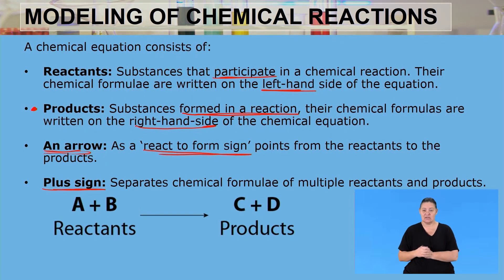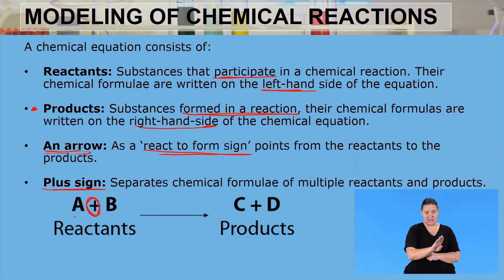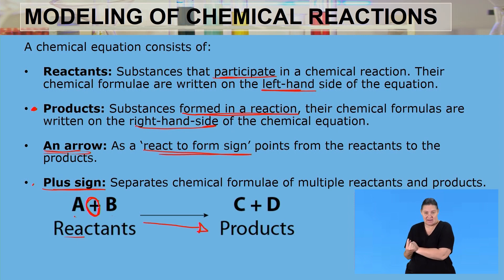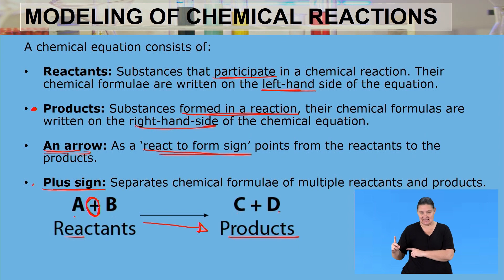As an example, we have two reactants A and B separated by a plus sign. These reactants are going to form something new. The arrow shows that A and B are undergoing a chemical reaction to form C and D, and C and D are the products.